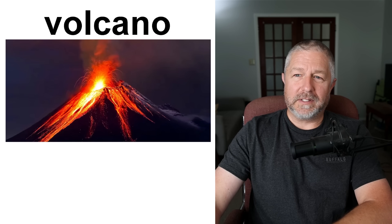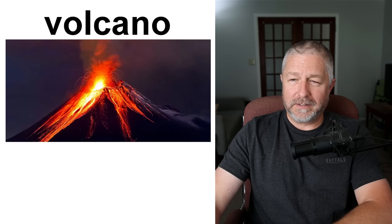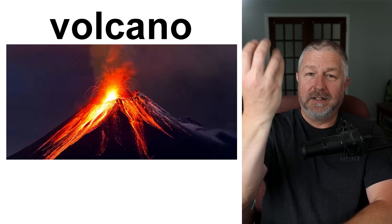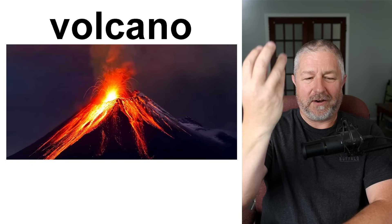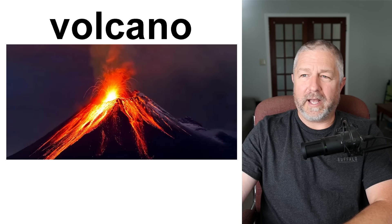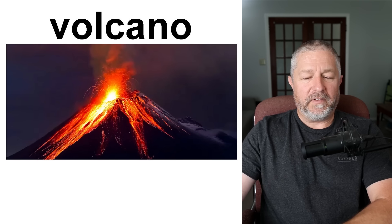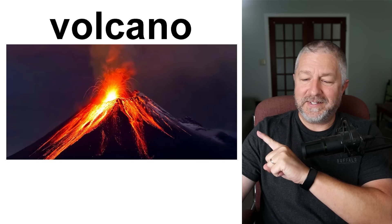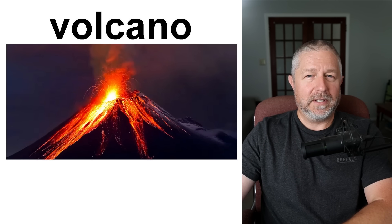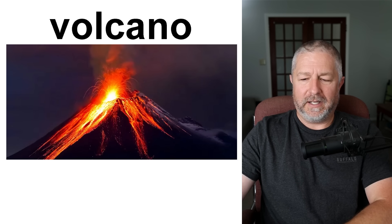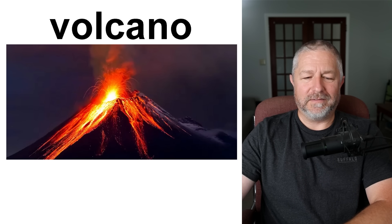A volcano. A volcano is something that is either dormant — meaning nothing's happening — or it might erupt, which means lava, molten rock, comes out of the top. Recently there was a volcano that erupted in Iceland. I would love, from a safe distance, to watch a volcano erupt at night — it looks incredible but it is very dangerous. It would be fun to see a volcano erupt.